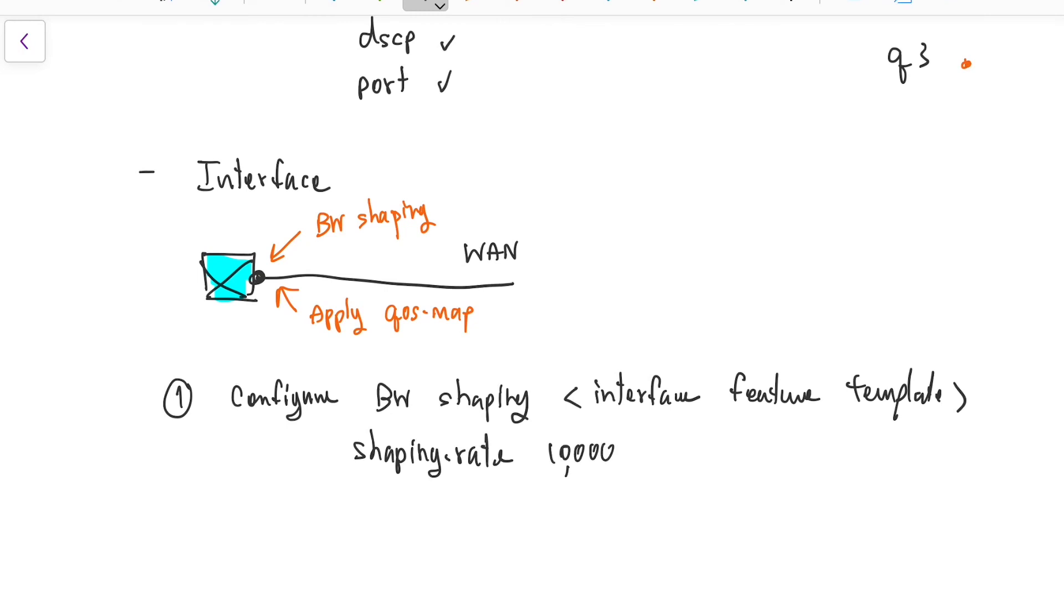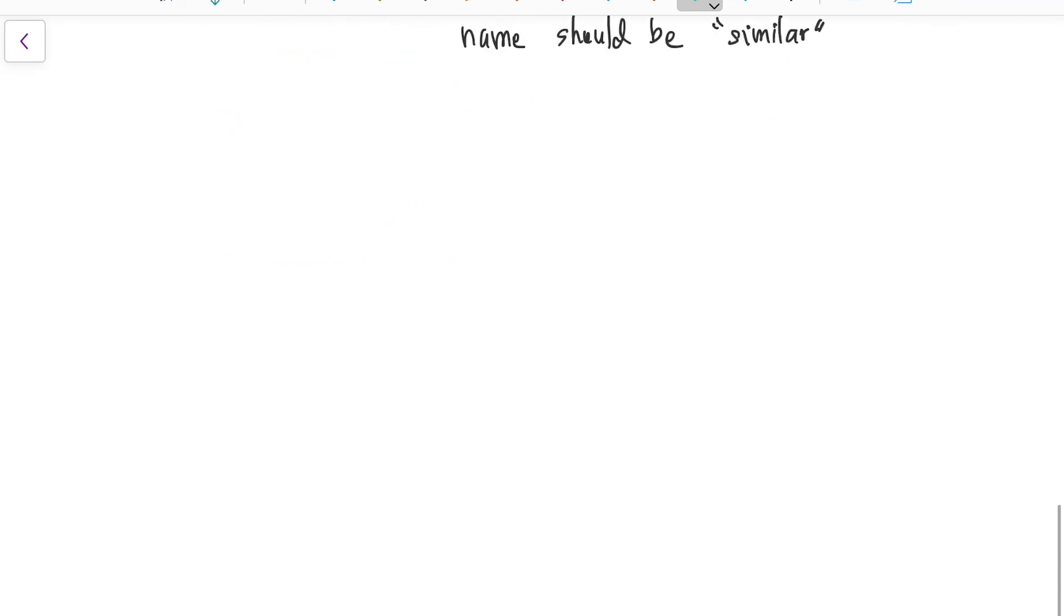It is in the shaping rate there. For example, 10K, which is the 10 Mbps per second egress. Then we're going to configure the QoS map. The name should be the same as what we have configured from the localized policies. This is important because if it's not the same, then it is not going to match the QoS map on the interface there.